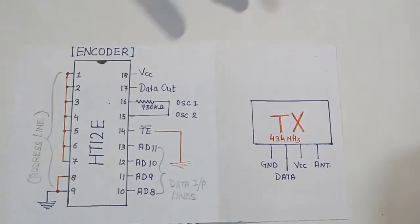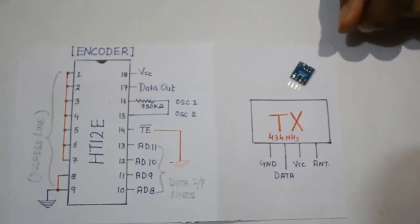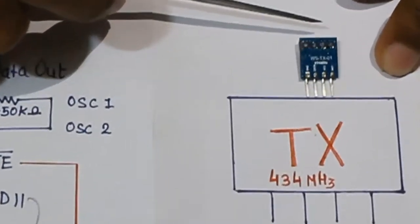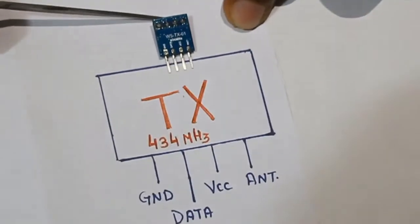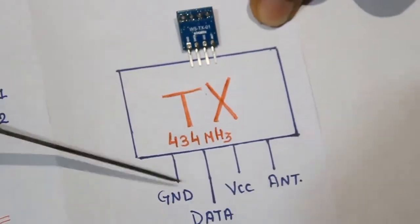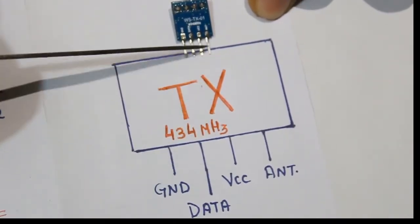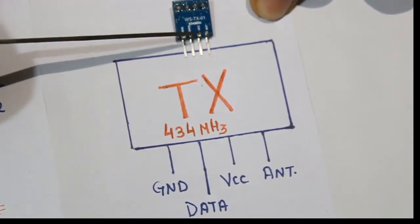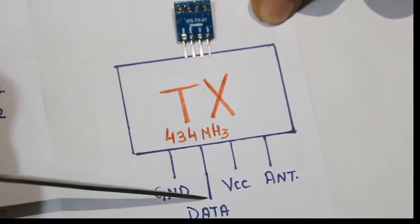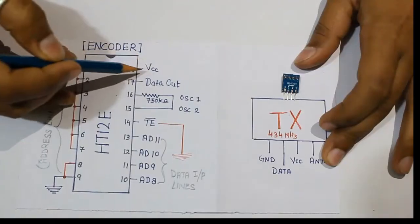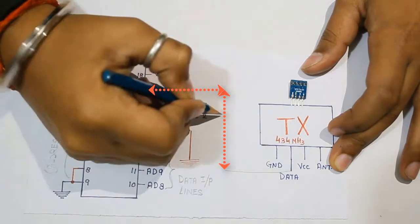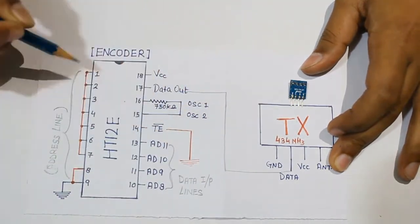Now I will be explaining you about my transmitter. This is my transmitter with 434 megahertz frequency. There are four pins in that: first is ground, second is data, then VCC, and then antenna. My data out will be connected to the second, means my data of transmitter. Means 17th pin of encoder will be connected to the second pin of my transmitter.